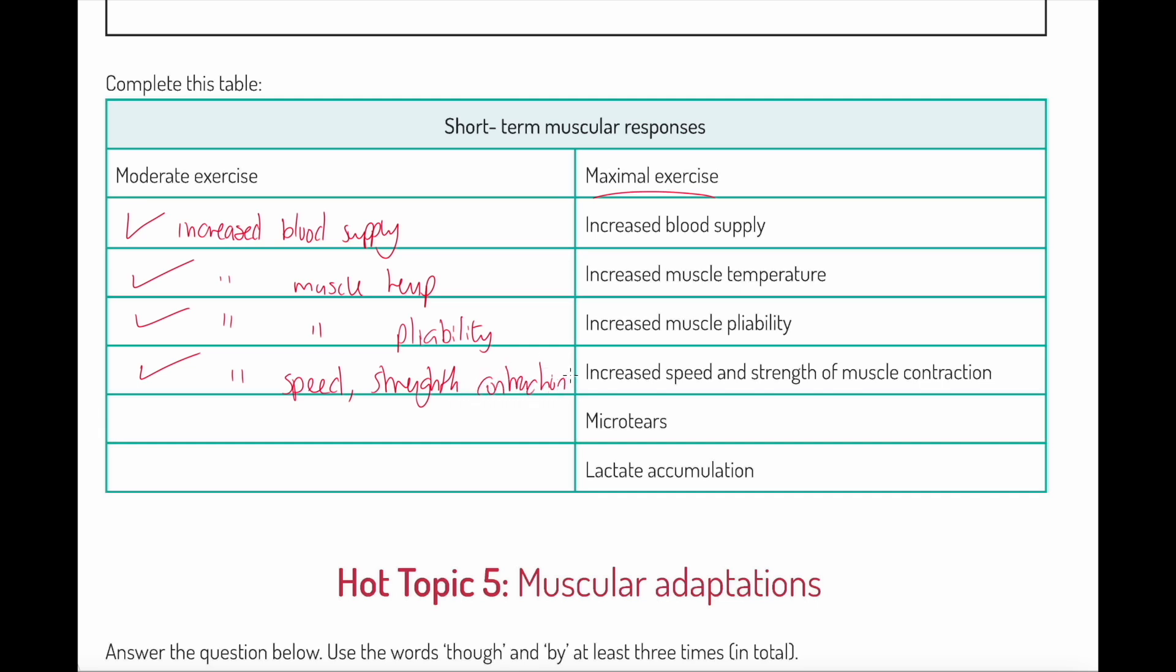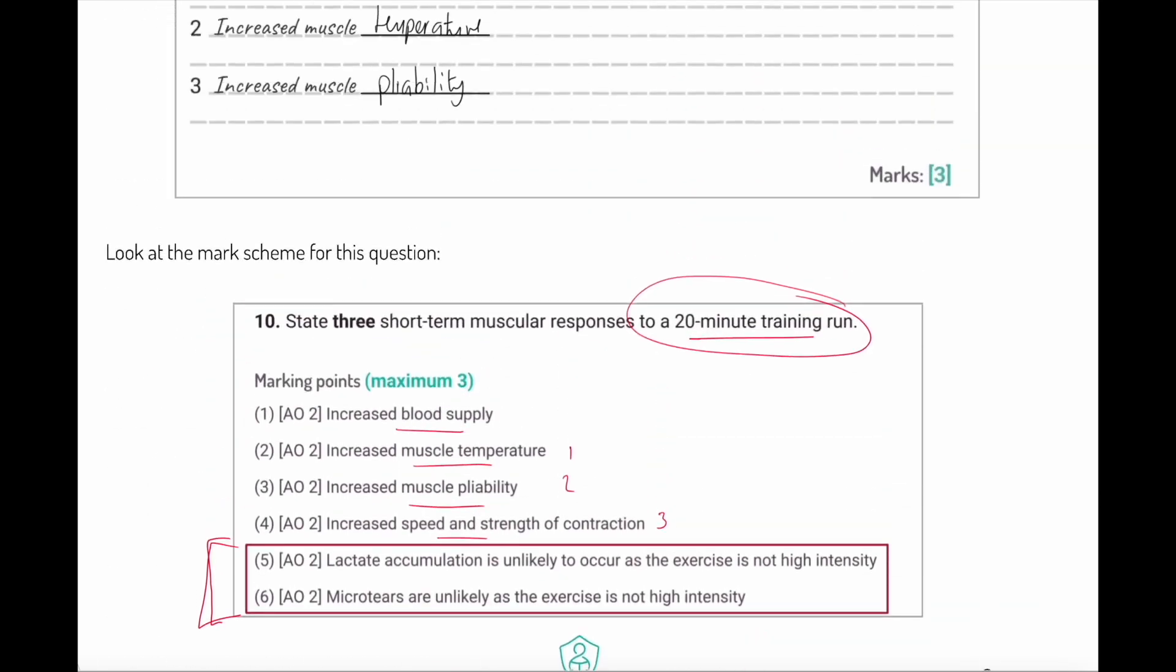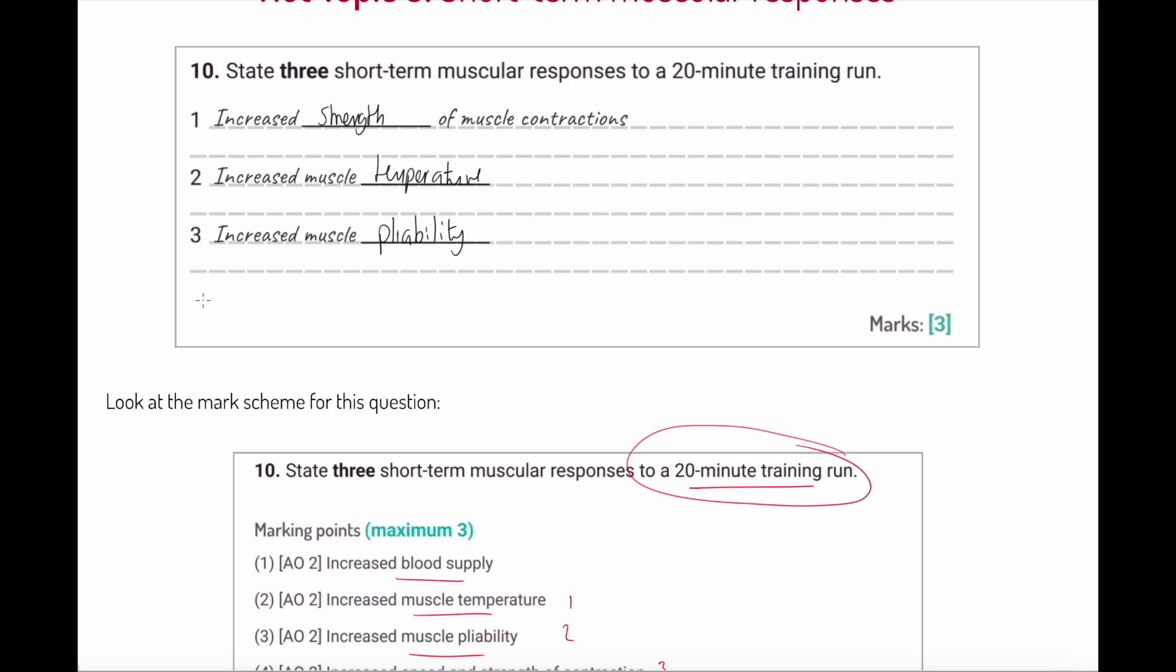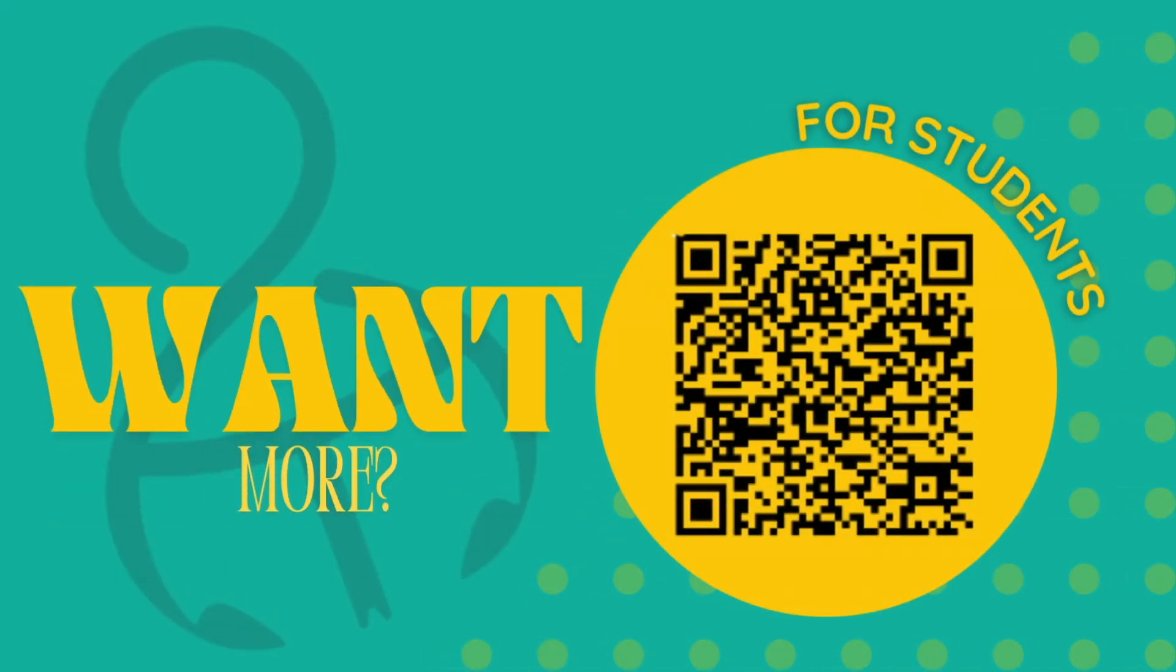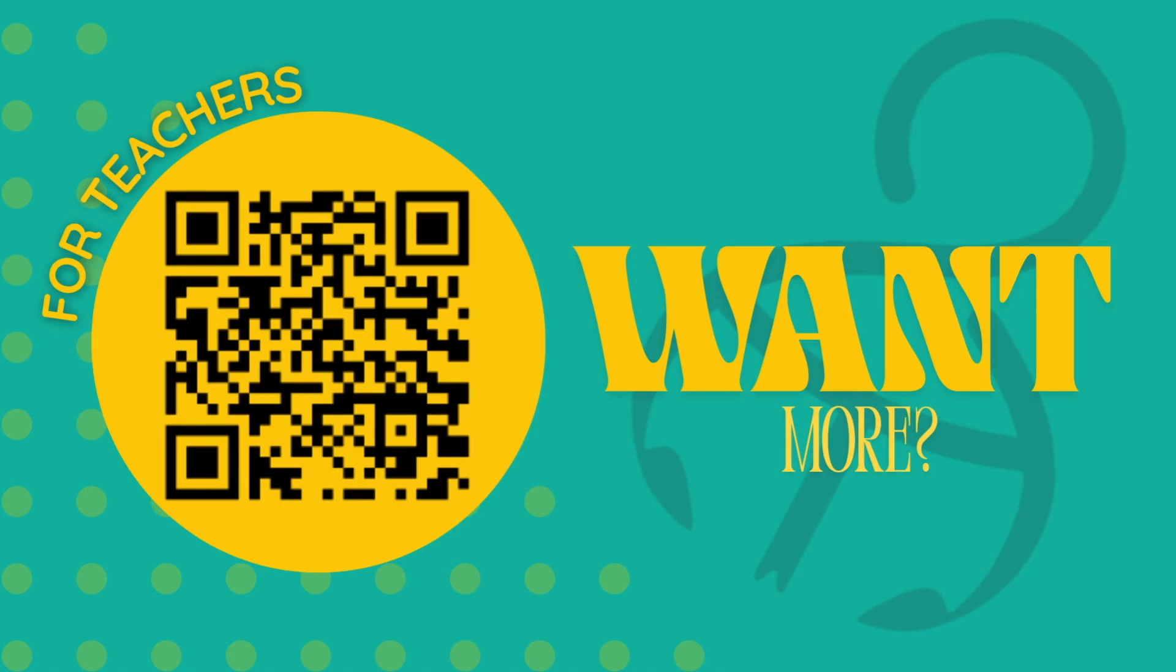But here's where I want to be specific, coming back to that marking point: would we get micro tears? No, we would get no micro tears for sub-maximal moderate intensity. Would we get lactate accumulation? No, we would not get accumulation. I wanted to make that point because sometimes we need to look at the detail of a question. Can you see now why if I had just said lactate accumulation, that would be wrong for that question? It's a training jog, a training run. We're not working at that intensity. We're not doing maximal work for 20 minutes of exercise. Something for you to be aware of.